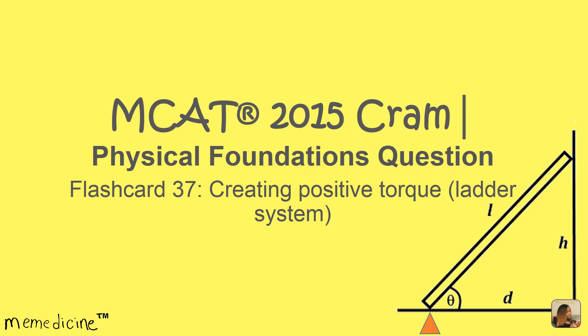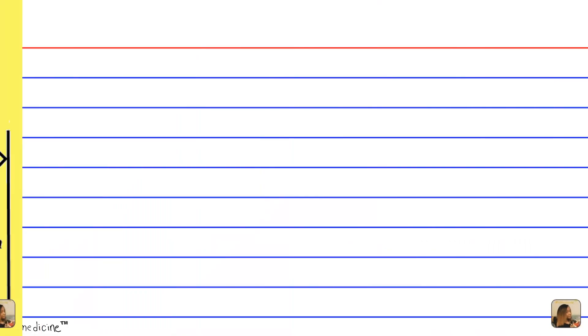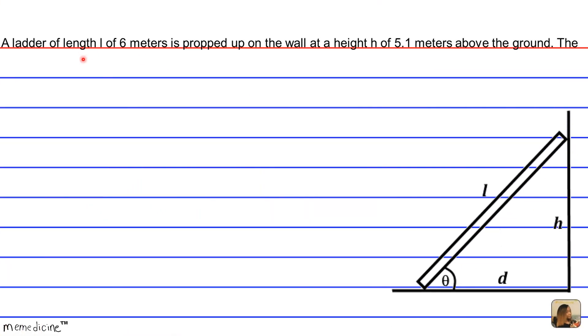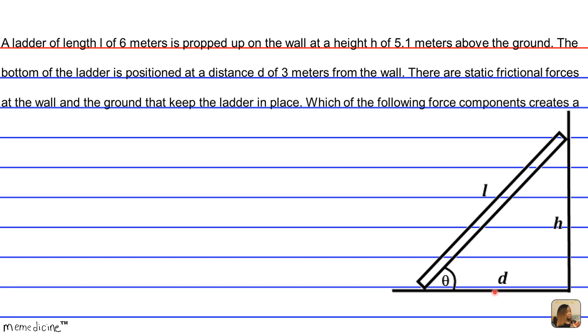Alright, let's delve into the question. A ladder of length L, 6 meters, is propped up on the wall at a height of 5.1 meters above the ground. The bottom of the ladder is positioned at a distance of 3 meters from the wall. There are static frictional forces at the wall and the ground to keep the ladder in place.